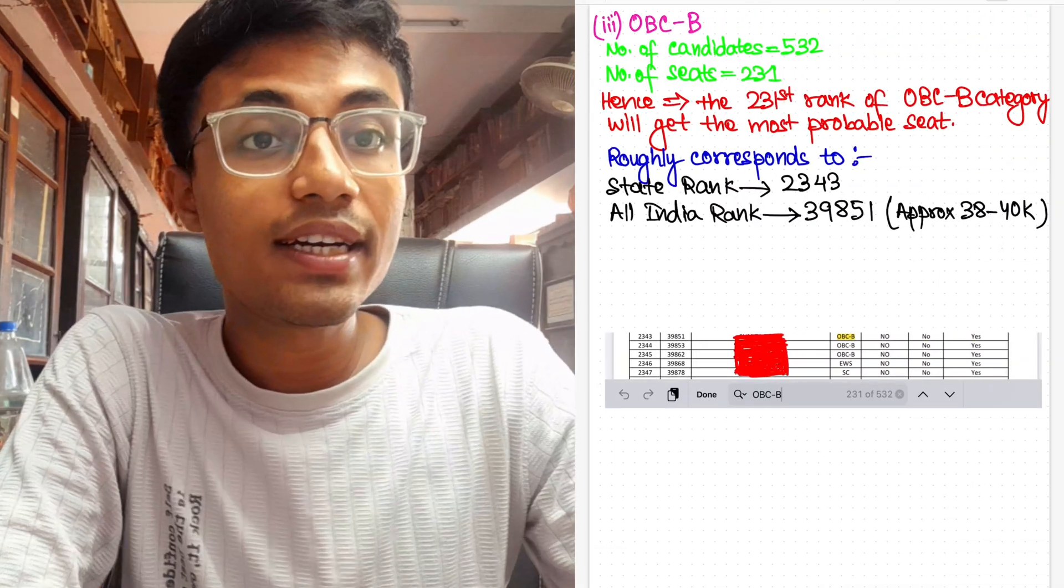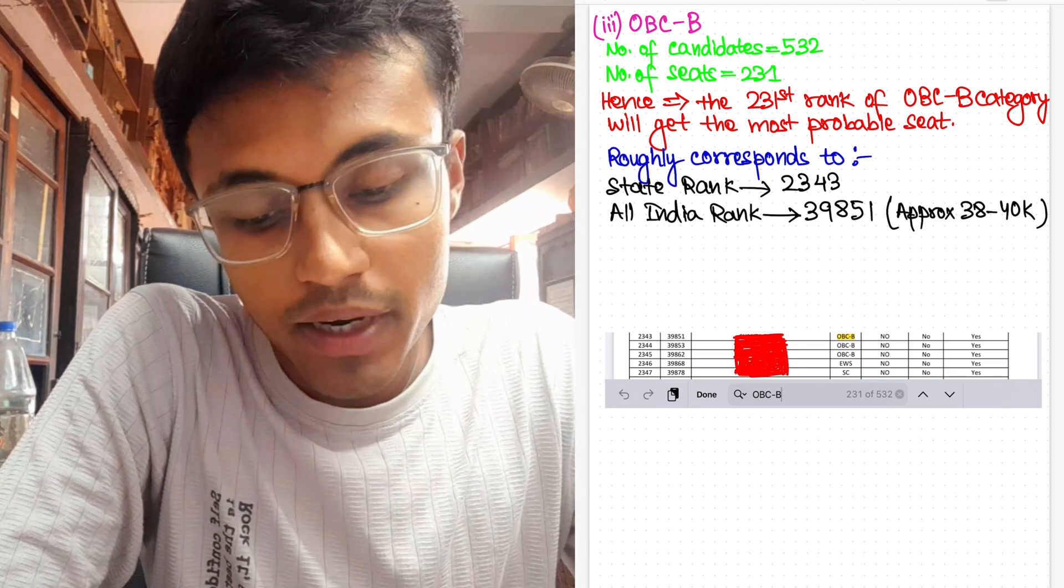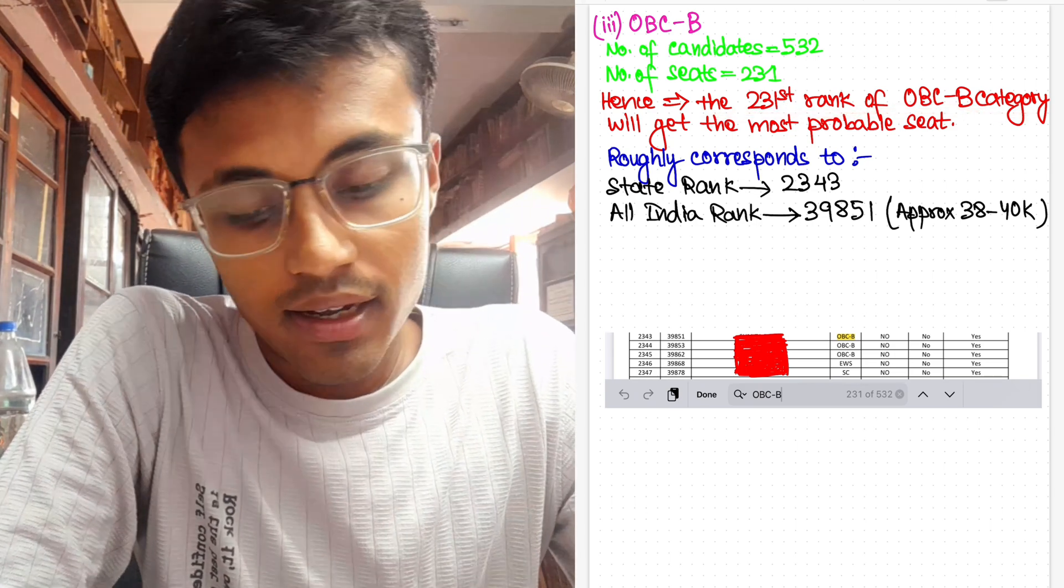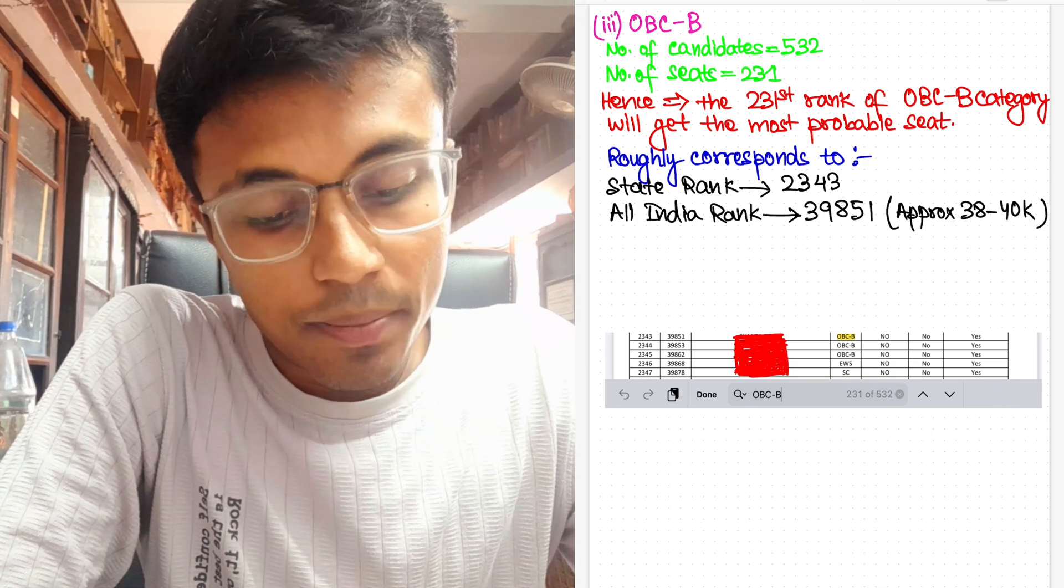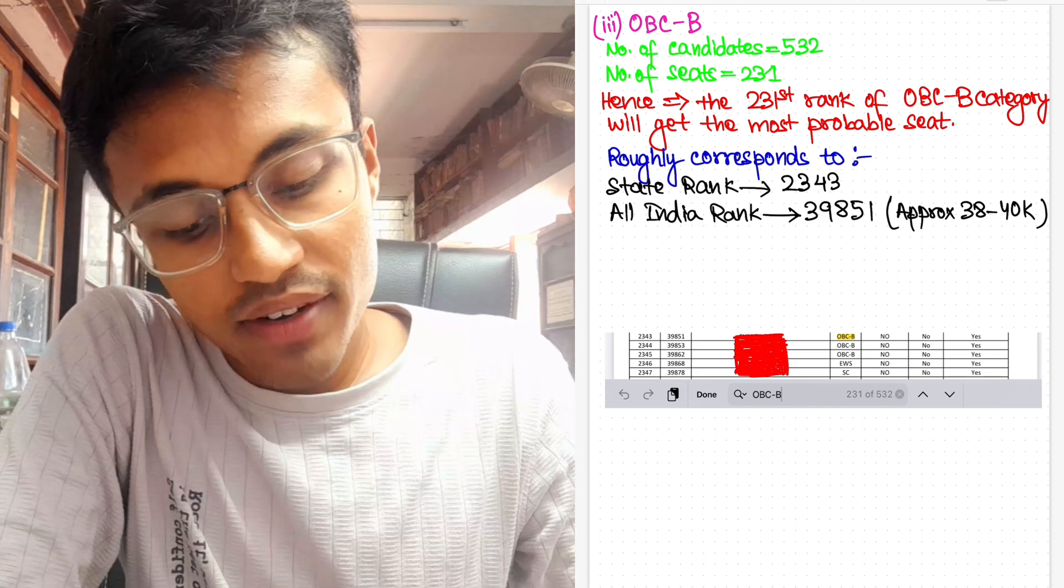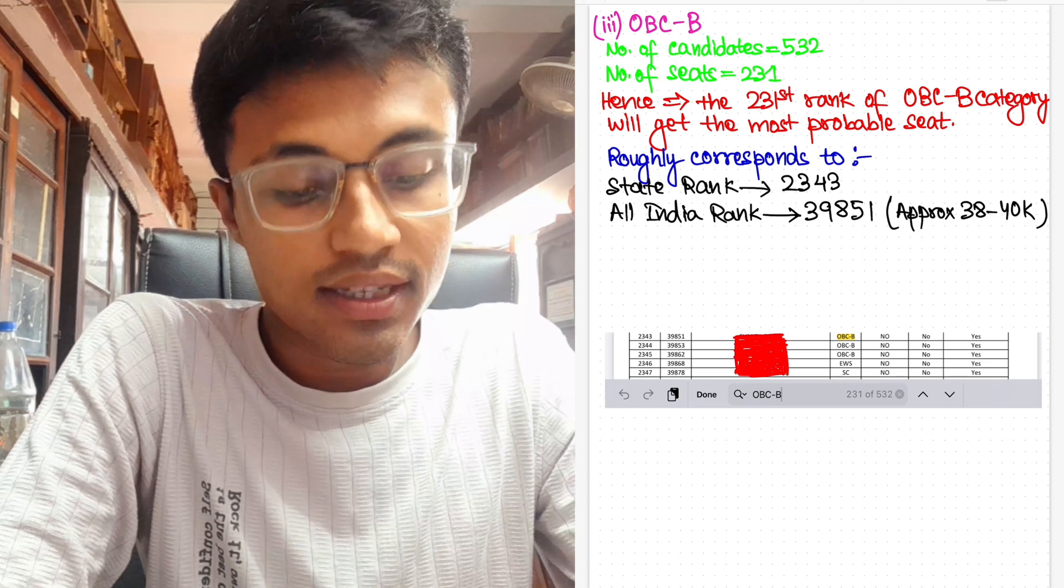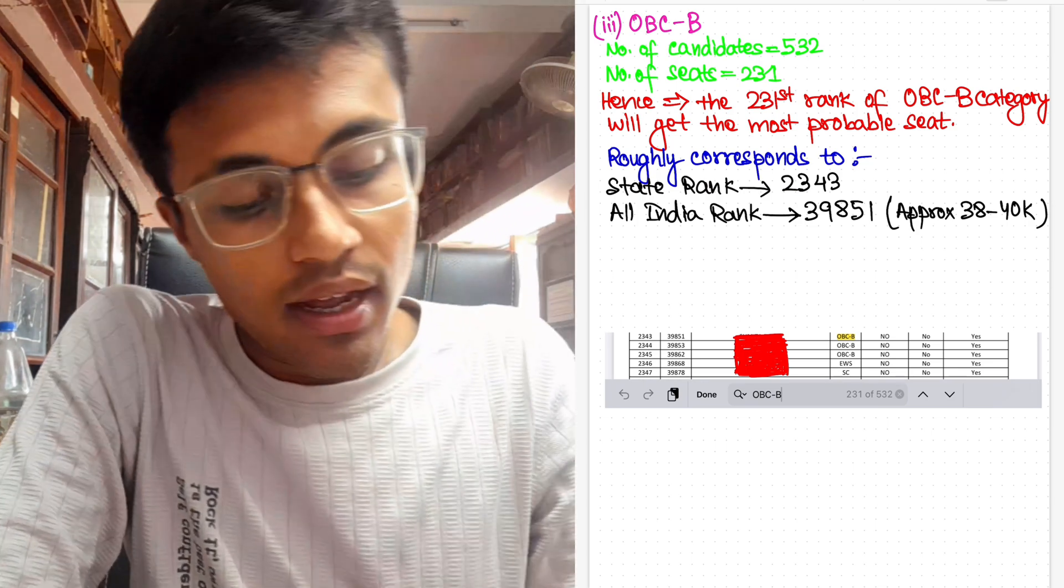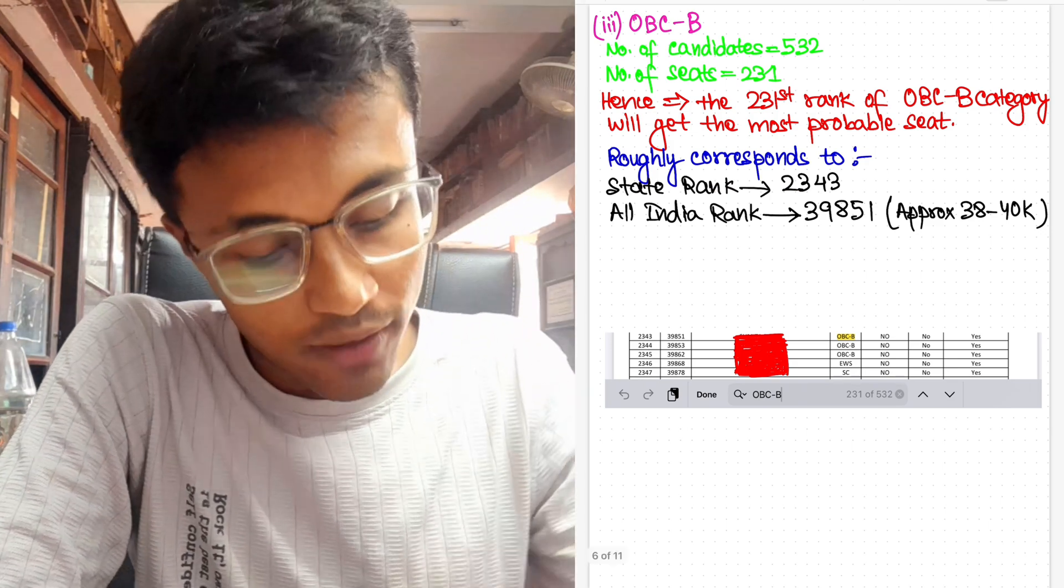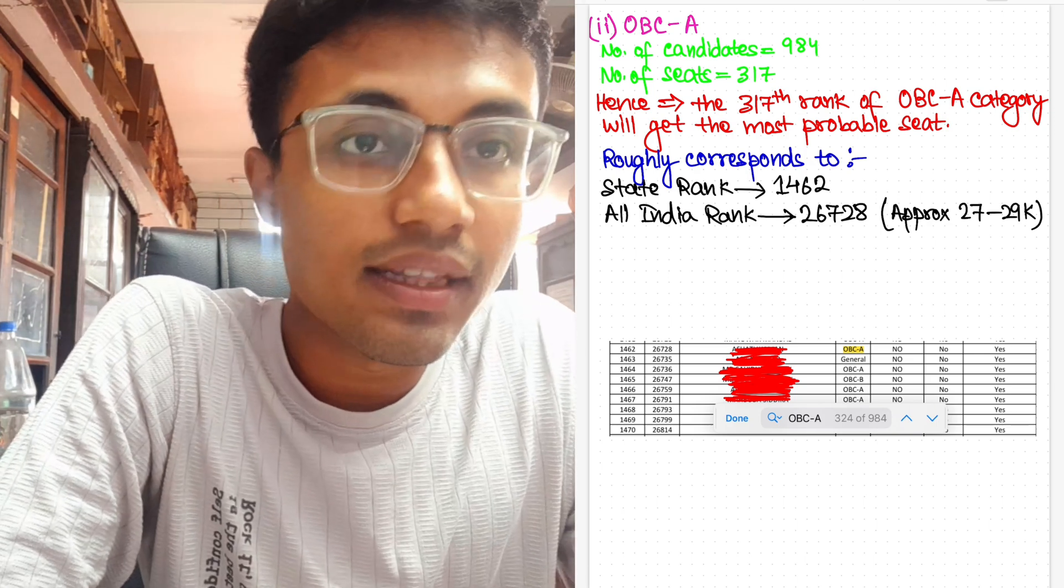Moving on, for OBC-B, the number of candidates participated is 532 and the number of seats allotted by the state of West Bengal is 231. So that 231st rank of OBC-A category will most probably be in the very high probability of getting the seat, which again roughly corresponds to 2,343 state rank and All India rank is 39,851. Again, my estimation would be anything between 38,000 to 40,000 for OBC-B. And for OBC-A, the approximation for the cutoff would be 27,000 to 29,000.